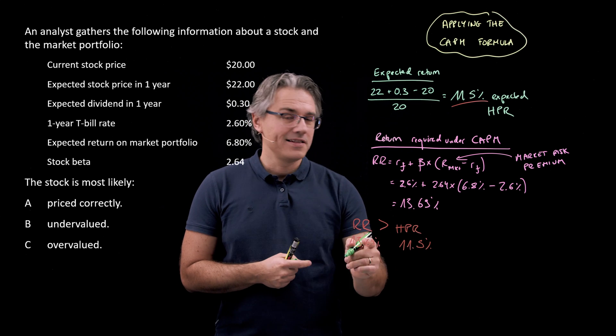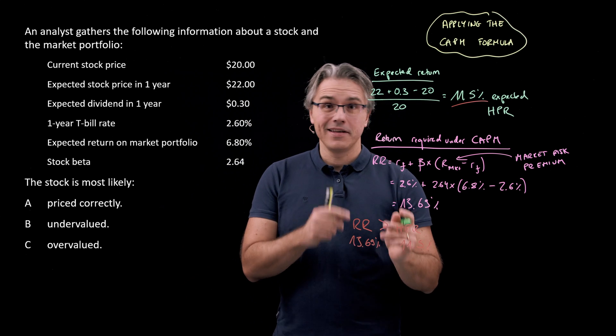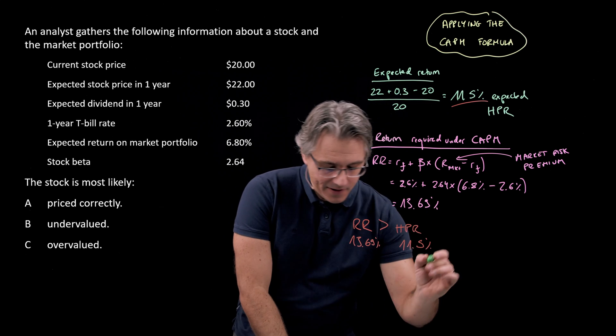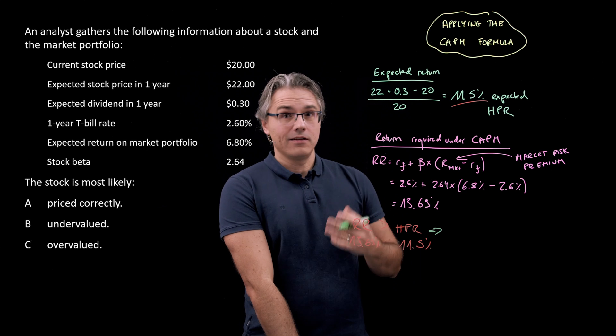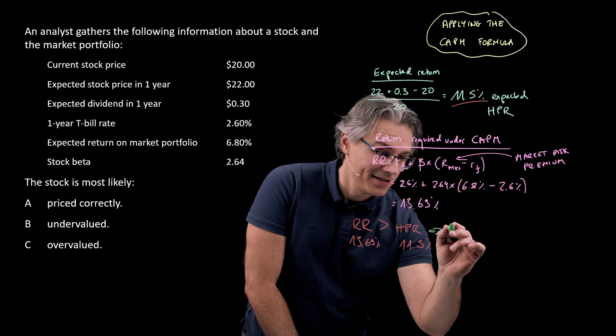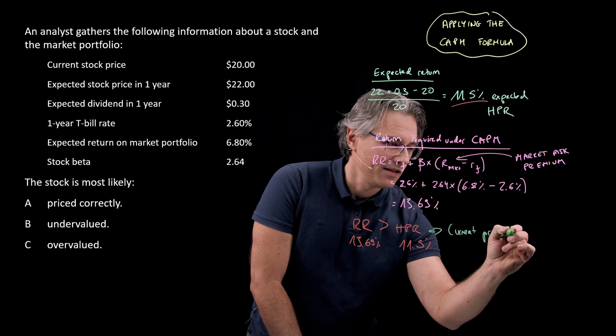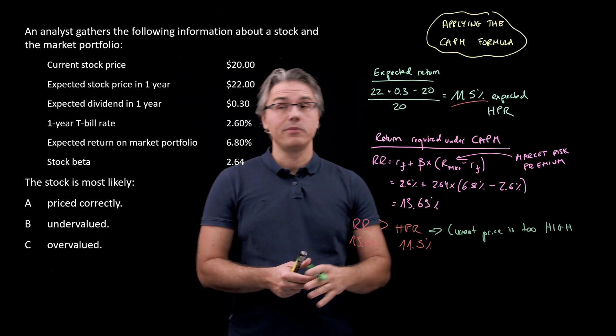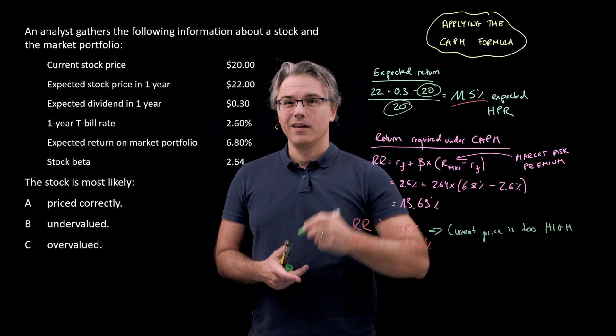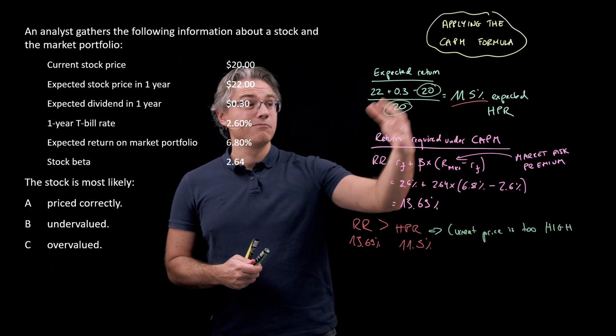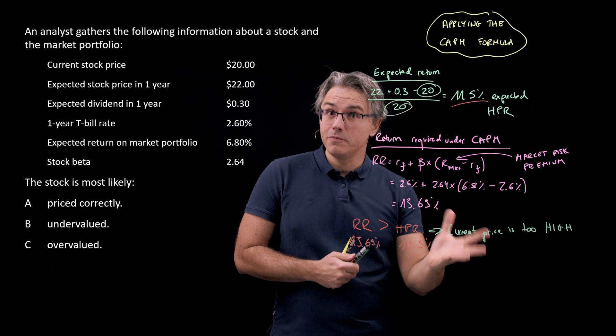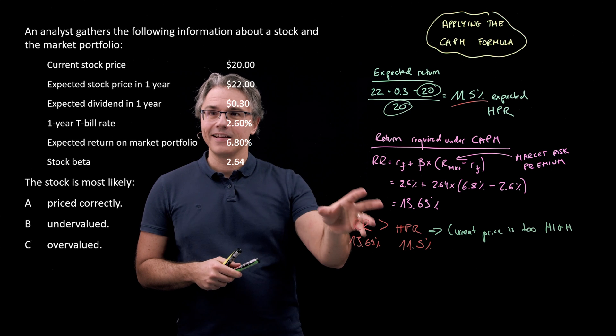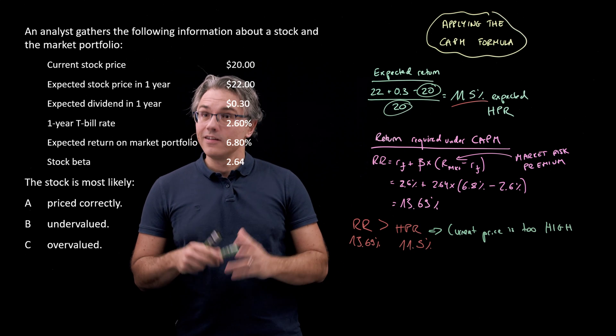Why is it not going to generate a yield that's enough? Because its price is currently too high. So the conclusion from this is that current price is too high. If it was lower right now, if we could buy this stock for less than 20, maybe the yield we would expect to generate from it would be higher and commensurate with the level of risk which it exposes us to. That's not the case.